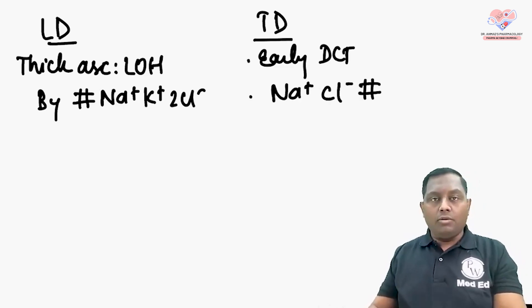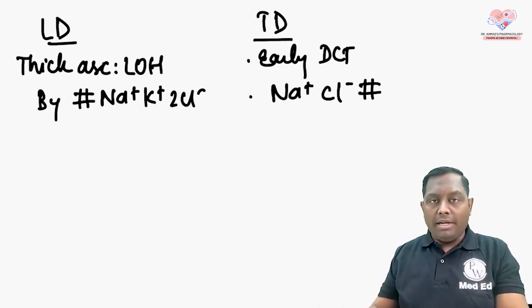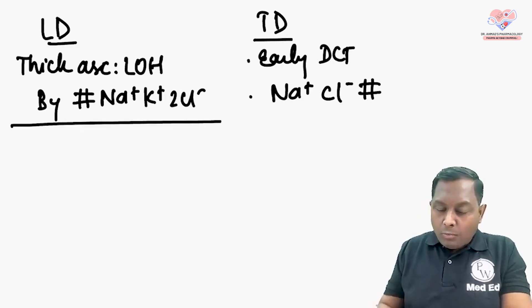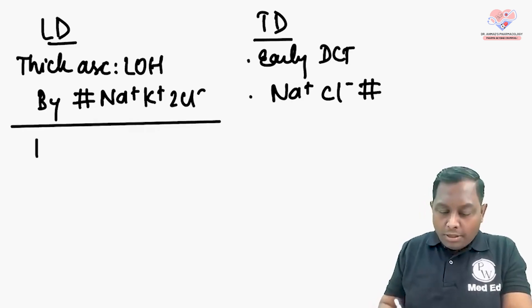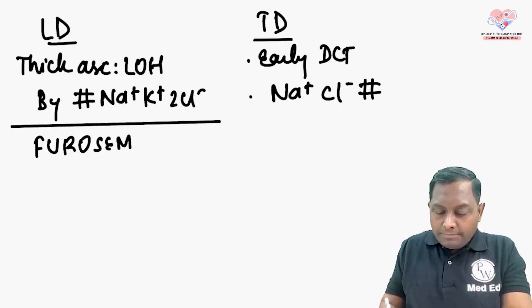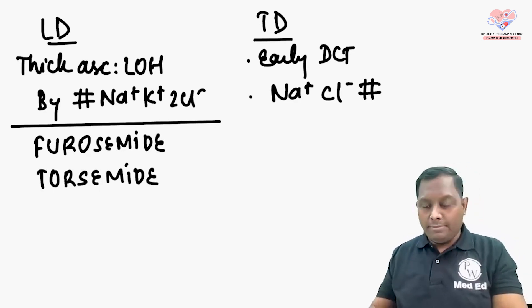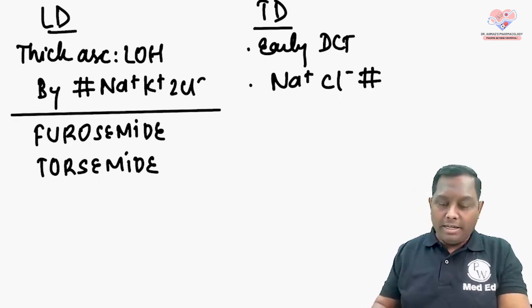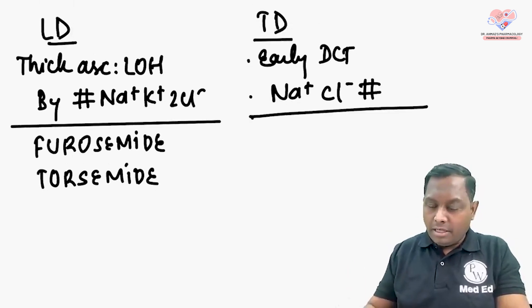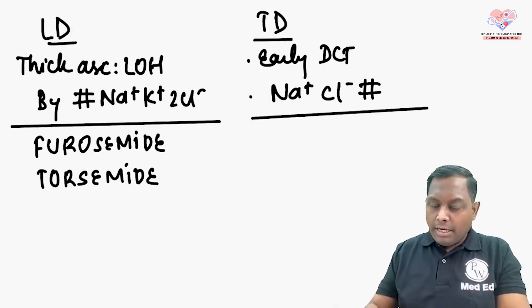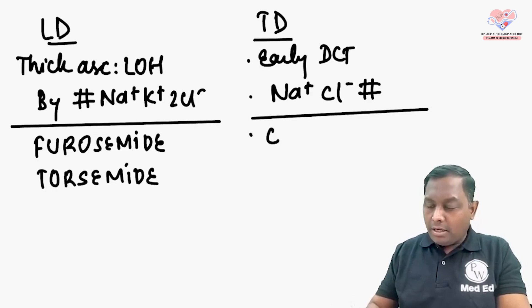Important loop diuretics include furosemide and torsemide, as well as ethacrynic acid. Under thiazide diuretics we have hydrochlorothiazide.